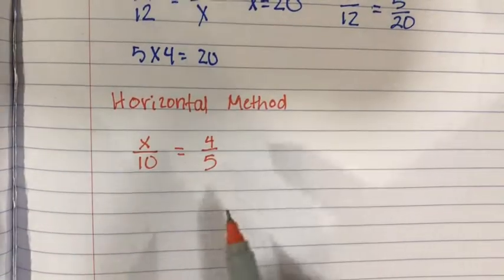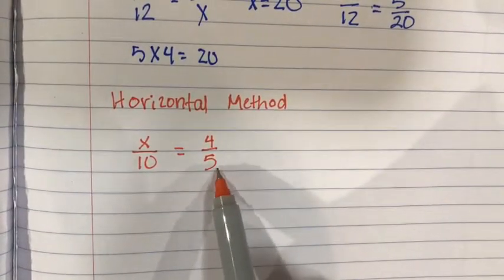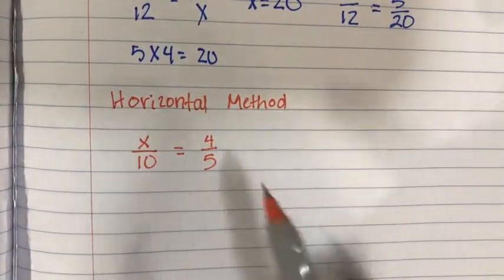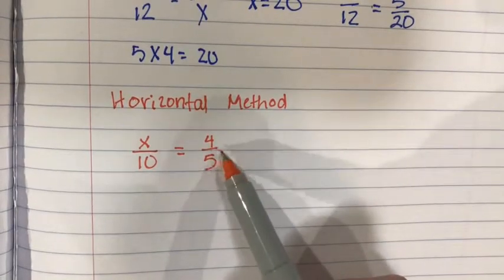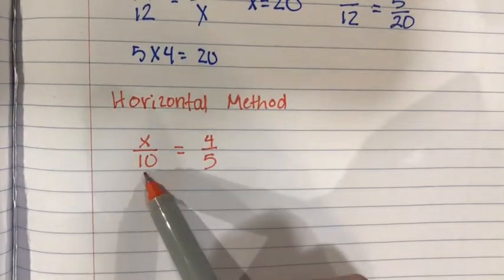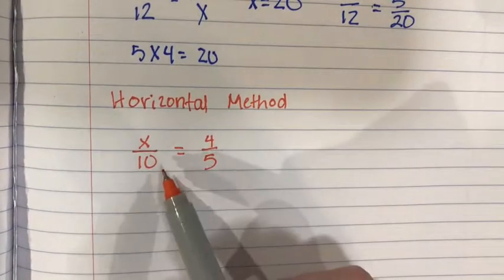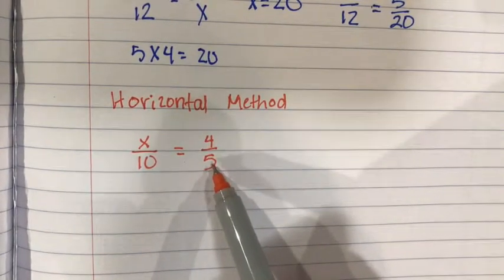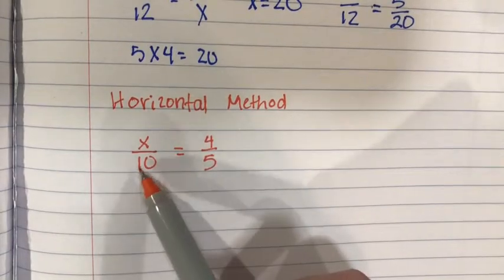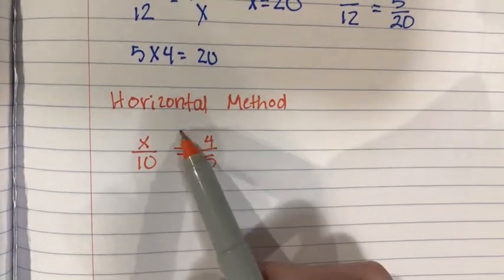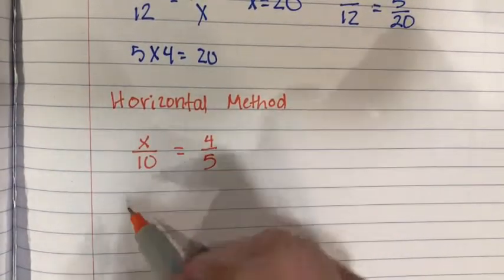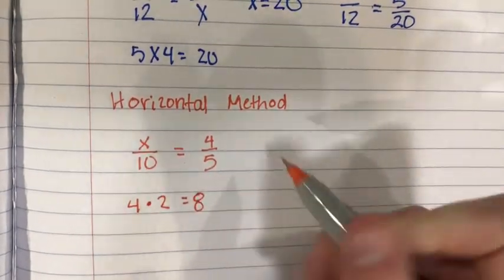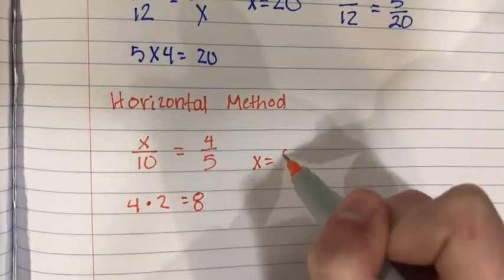In this method we are looking straight across, so what does it take to get from this number to this number. That number would be 2. We know that since 5 times 2 equals 10, then we have to multiply 4 times 2 to equal x. So 4 times 2 equals 8, meaning x equals 8.